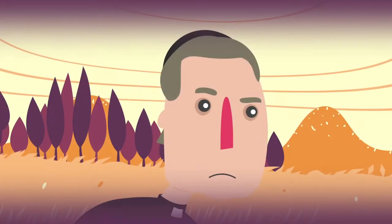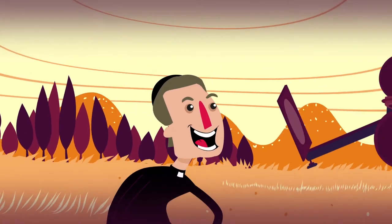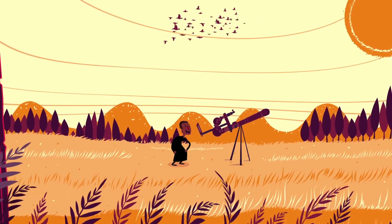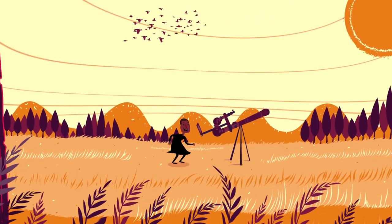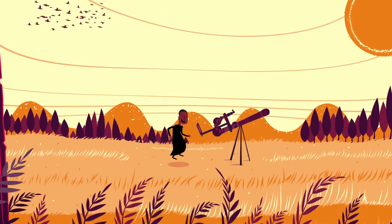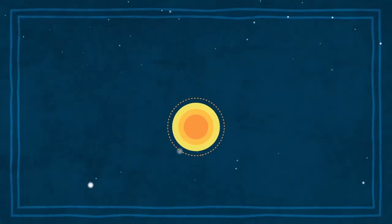El padre Secchi descubrió estas estructuras en 1877 y las llamó pratería ardente o pradera ardiente. Hoy las conocemos como espículas, que significa pequeñas espigas en latín. ¿Pero por qué son tan importantes?